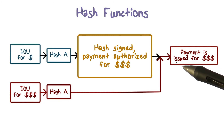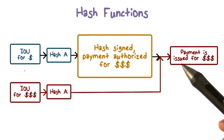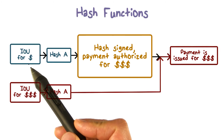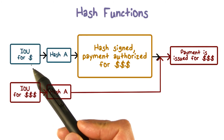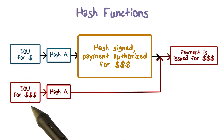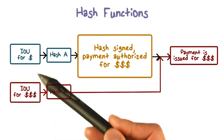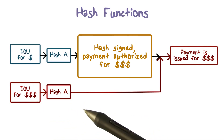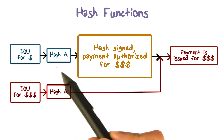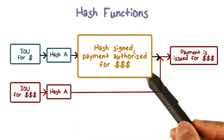Now suppose the strong collision resistant property is not true. That would mean that Bob can find two different messages — one with a smaller dollar amount. For example, this small amount can be just one installment of Alice's payment to Bob, and the larger amount would be several times the amount of money that Alice owes Bob. And if these two messages have the same hash value, then Bob can present a message with a small amount to Alice and have Alice sign it.